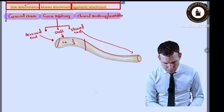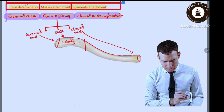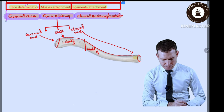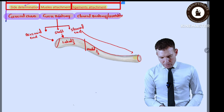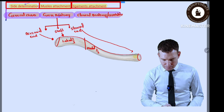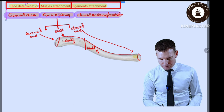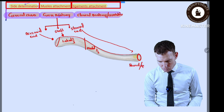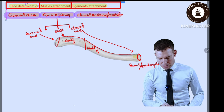The shaft of the clavicle is further subdivided into one-third lateral on the acromial side and two-thirds medial on the sternal side. When you look at the medial two-thirds, it is more cylindrical in shape. The sternal facet is round or quadrangular in shape.